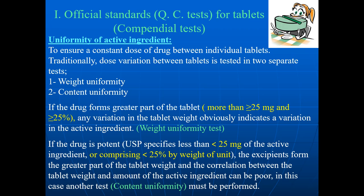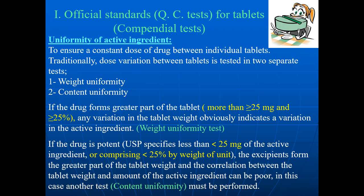One of the tests which is usually performed is uniformity of content, also called content of uniformity or uniformity of active ingredient. This test is performed to ensure a constant dose of drug between individual tablets. Traditionally, the dose variation between tablets is tested in two separate tests: weight uniformity and content uniformity.